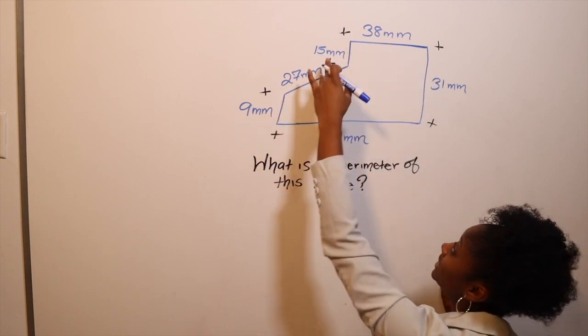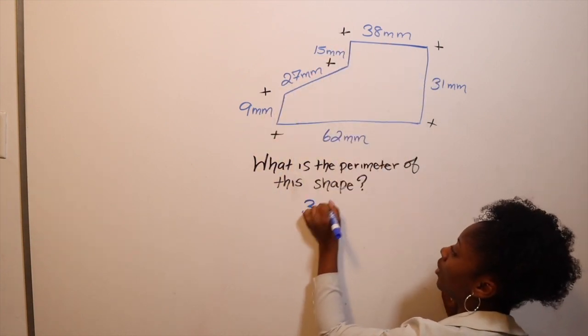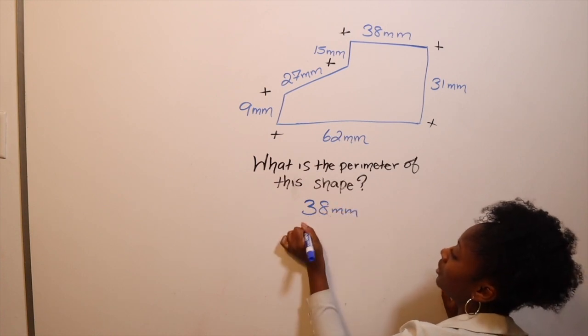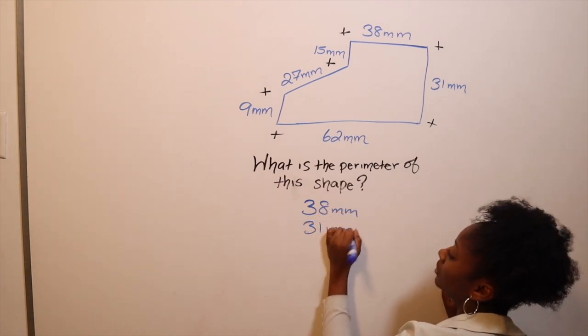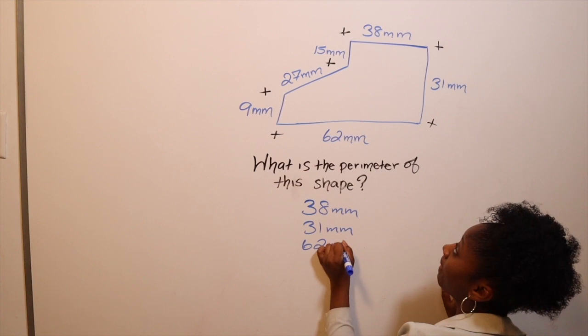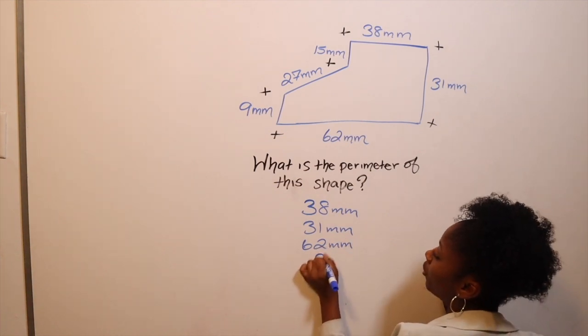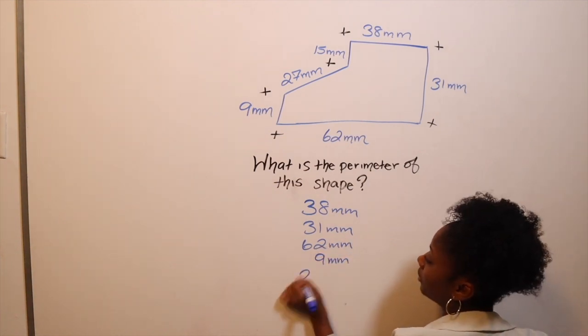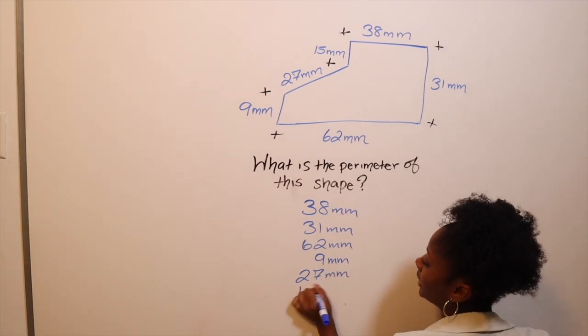So two, four, six - you should have six numbers that you write down. One, two, three, four, five, six.